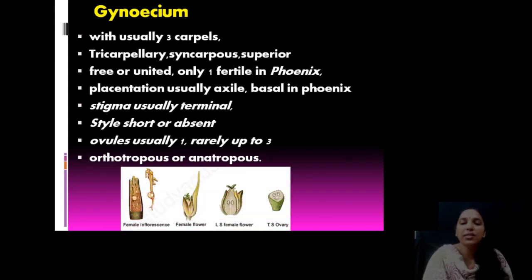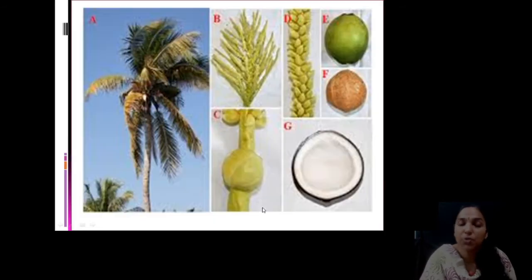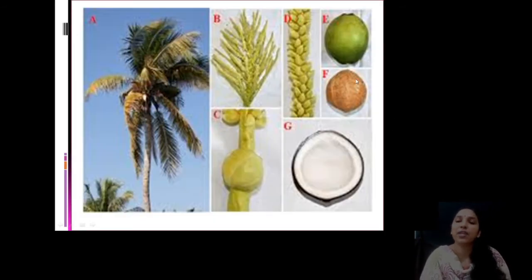This is the female inflorescence and female flower. Three carpels are present. The stigma is at the tip and style is very short or absent — so short you cannot differentiate it. Taking a transverse section of flower shows axile placentation. The female part and male part can also be seen in the flower.